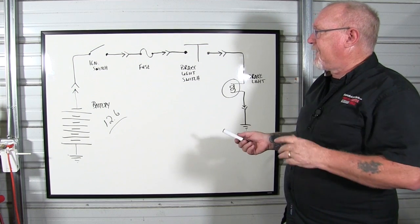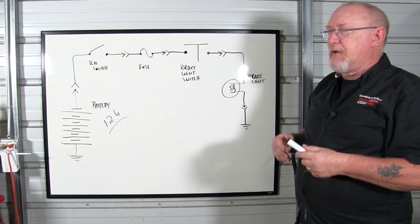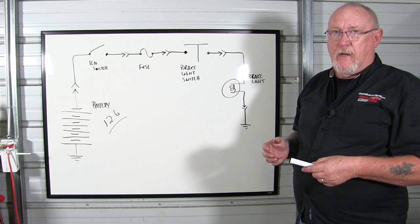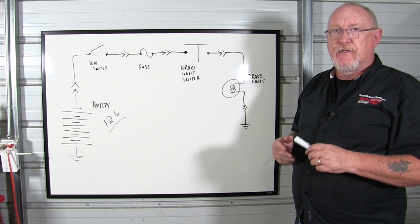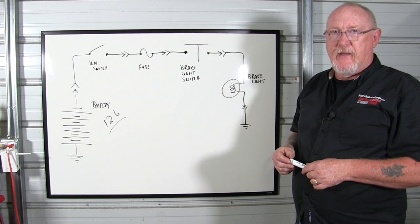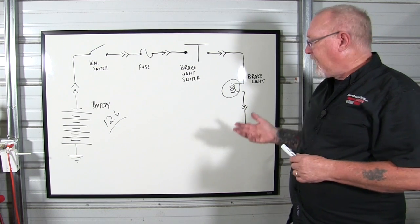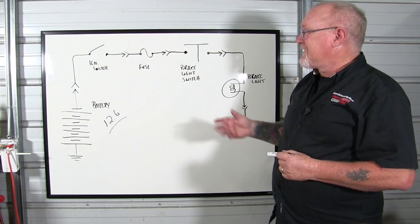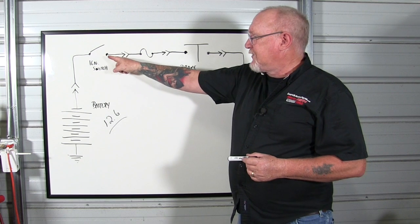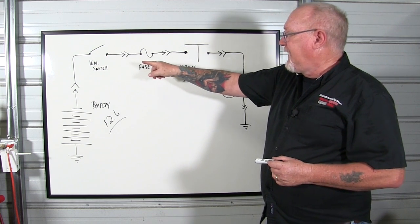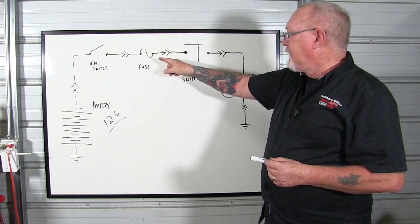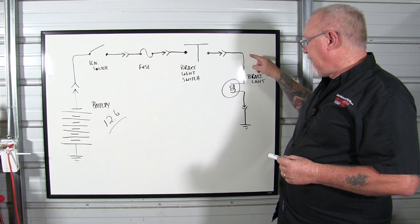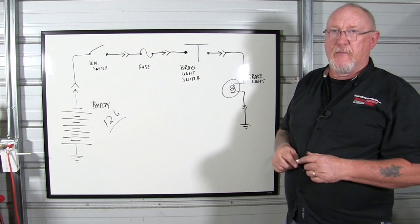Now, the next element that every circuit has to have are the control devices. Maybe only one, maybe more than one. But the control device is the device used to open and close the circuit path, allowing us control over the load, rather than letting the load have control over us. In this case, there's two. We have the ignition switch, and that's going to feed key voltage to the fuse. And then the second control device, the brake light switch, that actually finishes the path and allows the brake light bulb to turn on.